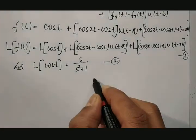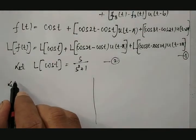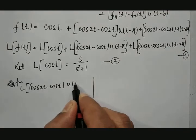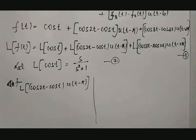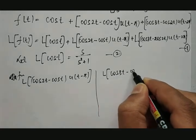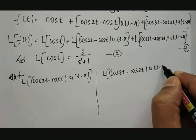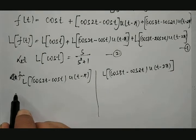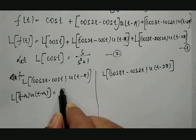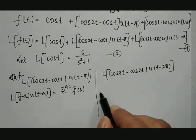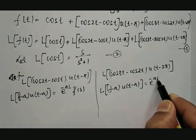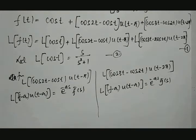The other two terms need to be solved separately. To find L{(cos 2t − cos t)·u(t − π)} and L{(cos 3t − cos 2t)·u(t − 2π)}, we use the property: L{f(t − a)·u(t − a)} = e^(−as)·F̄(s), and similarly L{g(t − a)·u(t − a)} = e^(−as)·Ḡ(s).